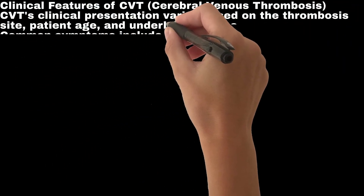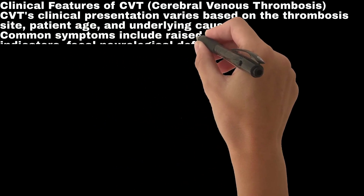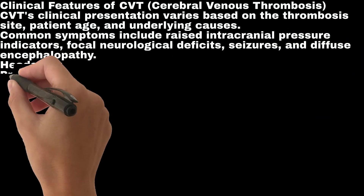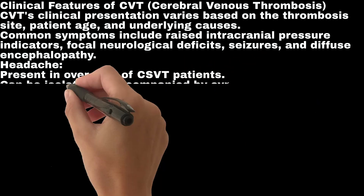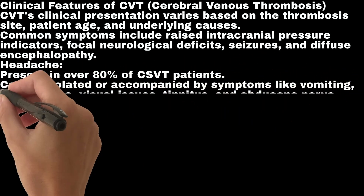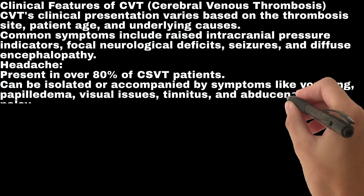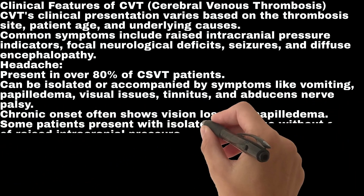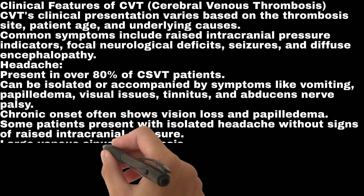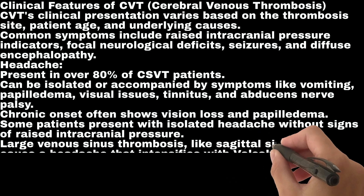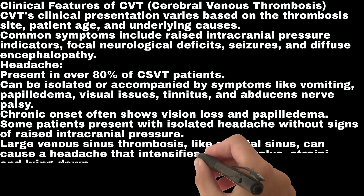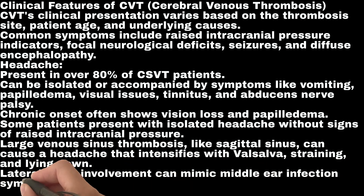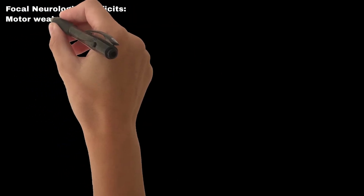CVT's clinical presentation varies based on the thrombosis site, patient age, and underlying causes. Common symptoms include raised intracranial pressure indicators, focal neurological deficits, seizures, and diffuse encephalopathy. Headache is the most common symptom, present in over 80% of CSVT patients. It can be isolated or accompanied by vomiting, papilledema, visual issues, tinnitus, and abducens nerve palsy. Some patients present with isolated headache without signs of raised intracranial pressure. Large venous sinus thrombosis, like sagittal sinus, can cause a headache that intensifies with Valsalva, straining, and lying down. Lateral sinus involvement can mimic middle ear infection symptoms.